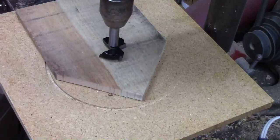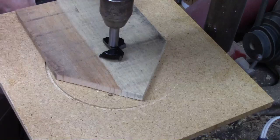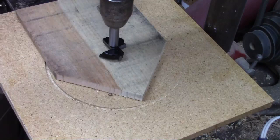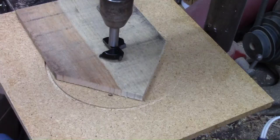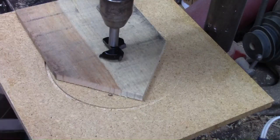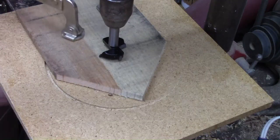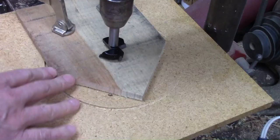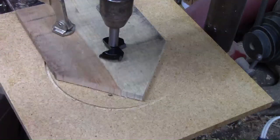When using the forstner bit, you want to make sure your workpiece is securely secured. Use a couple of clamps to hold the workpiece in place and keep it secure and out of the path of the drill.